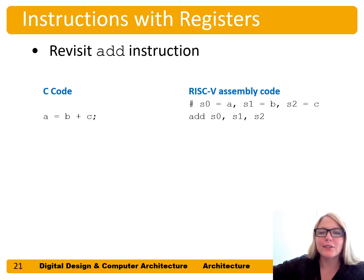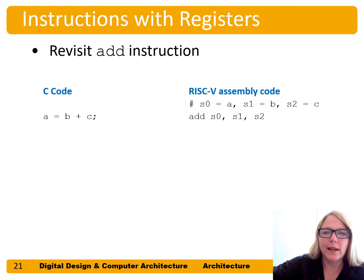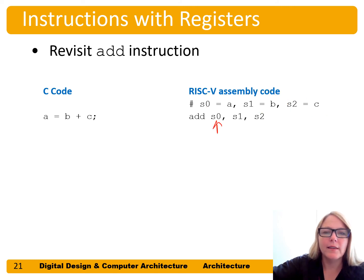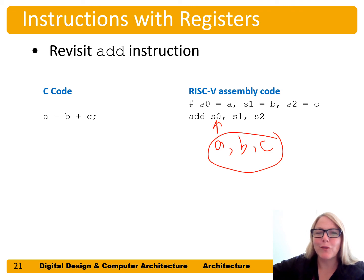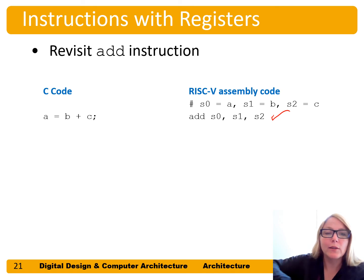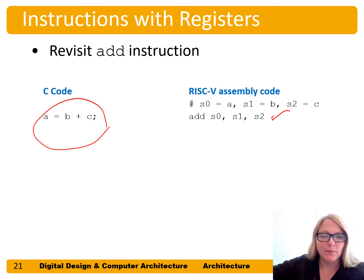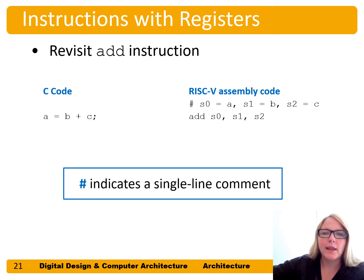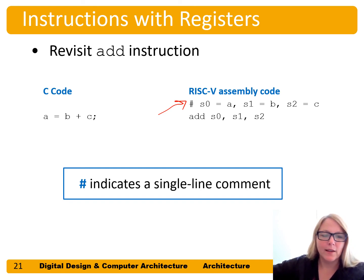Here's the ADD instruction with actual operands. If s0 holds a, s1 holds b, and s2 holds c, then we write: add s0, s1, s2 — meaning a = b + c. We put in the actual registers, choosing them by convention: variables are kept in saved registers s0 through s11. The pound symbol indicates the rest of the line is a comment — ignored by the compiler, it's just a single-line comment for humans to read.